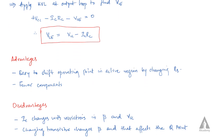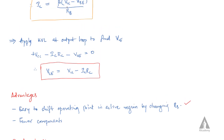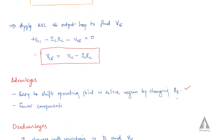So we will get the value of VCE as VCE equal to VCC minus ICRC. By changing the value of RB, we can change IC and thereby change the operating point. Fewer components are only needed in this fixed biasing technique.